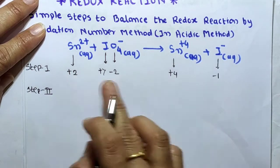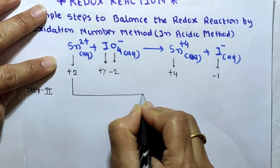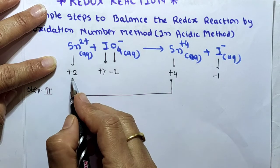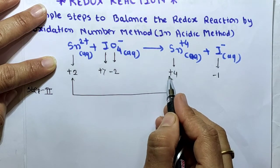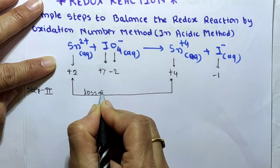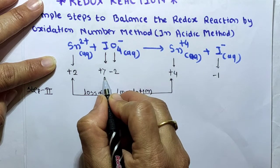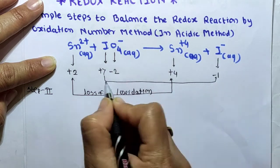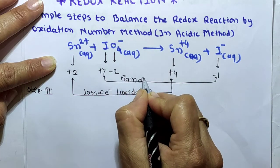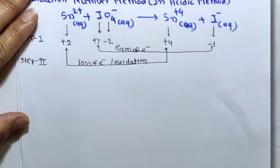In step two, we identify the atoms undergoing change in oxidation number. Sn changes from +2 to +4 — oxidation number increases, meaning loss of electrons, which is oxidation. Iodine decreases in oxidation state from +7 to −1 — that is gain of electrons, which means reduction.